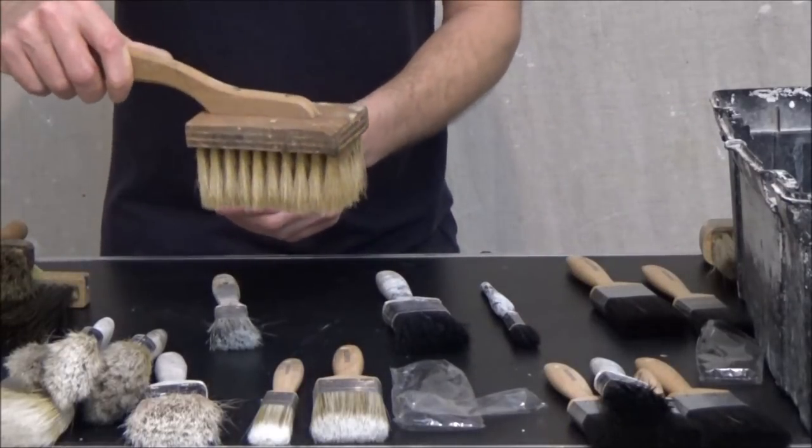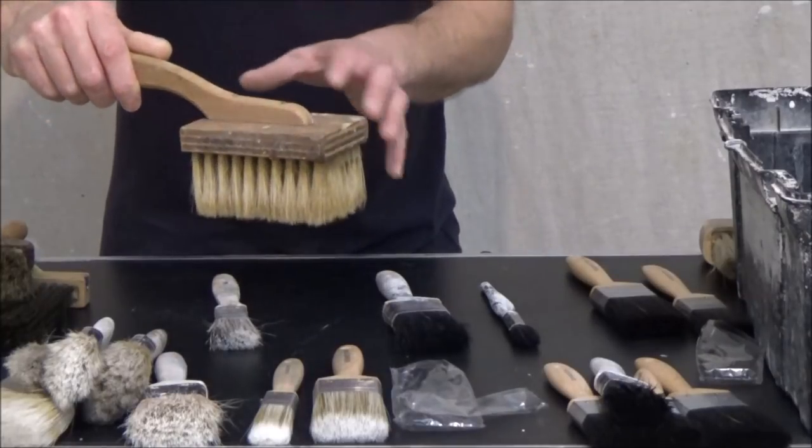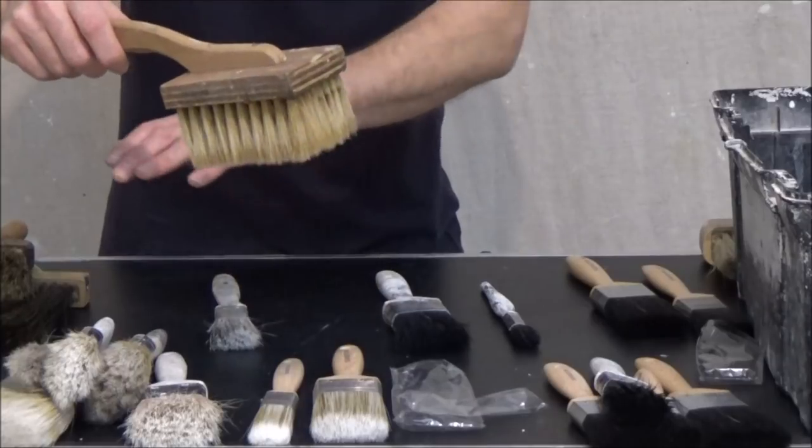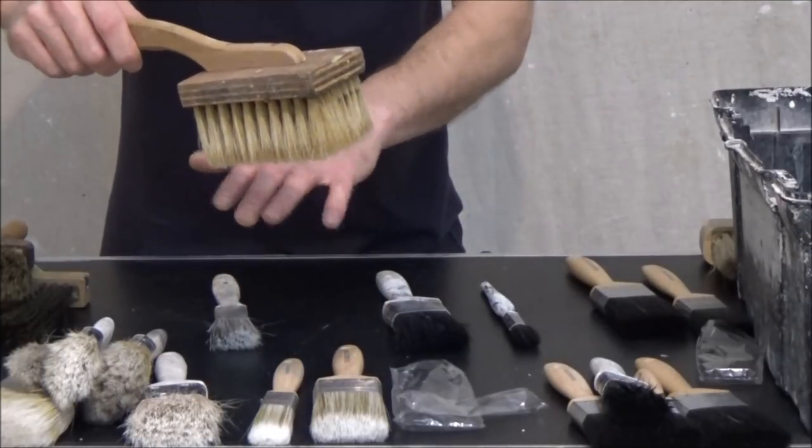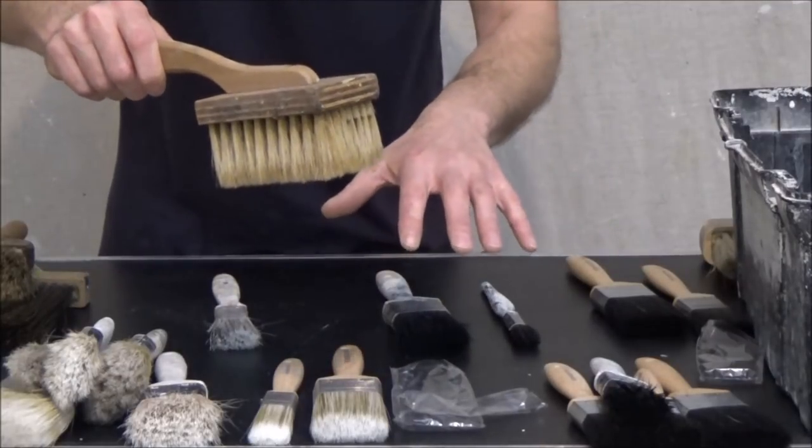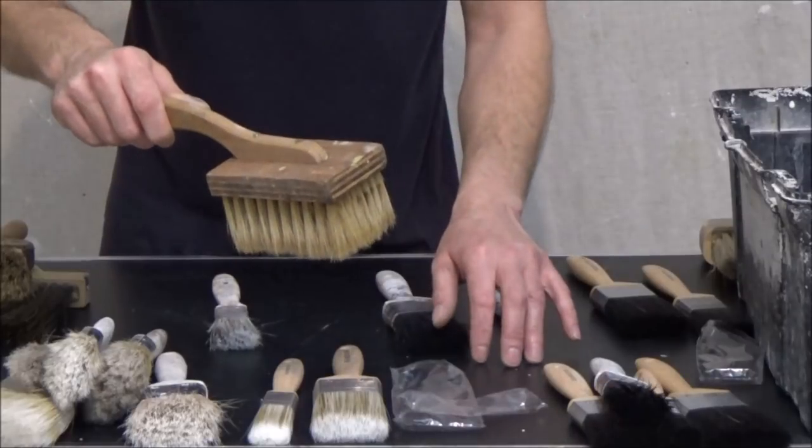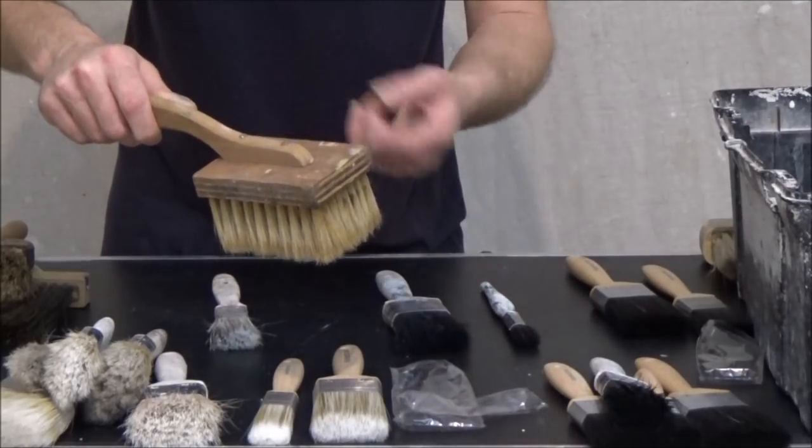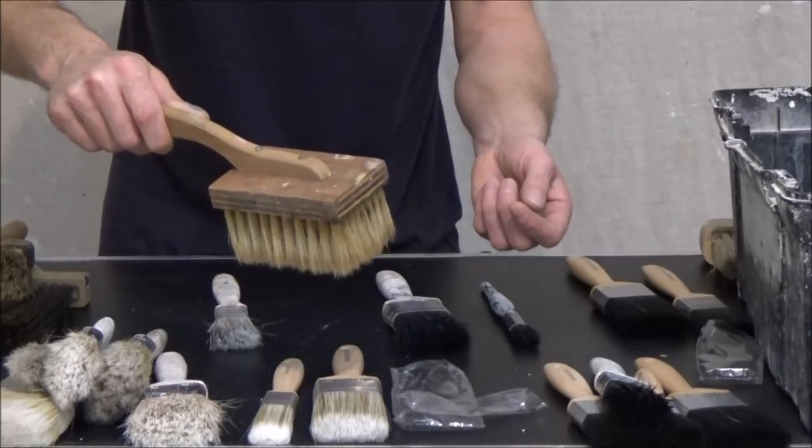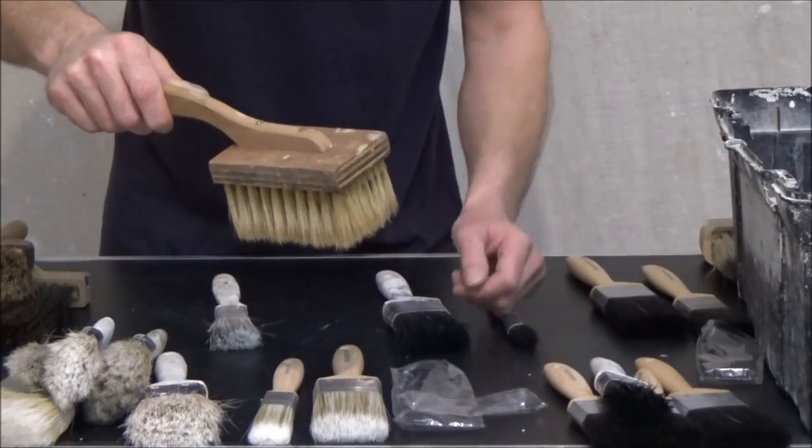This is called a stippler. And you use that for certain paint effects, like rag rolling. You brush your paint on a surface and then use the stippler to get rid of any brush marks within it to make an even surface before you rag roll. Over time, I'll be showing you some of these special paint effects that you can actually do. Wood graining, marbling, rag rolling, things like that. Sign writing.